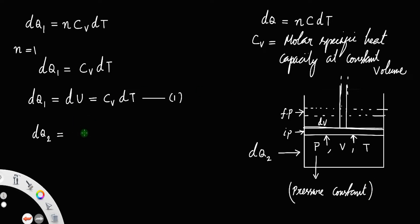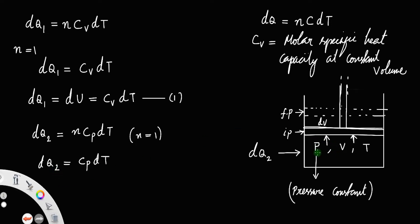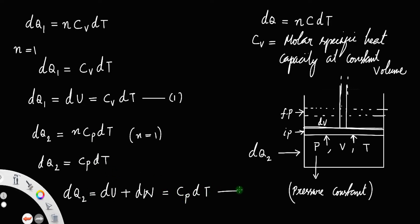Since pressure is constant, the heat supplied is dq2 = n·Cp·dT, and for one mole (n = 1), dq2 = Cp·dT. Let us call that Equation 2. The heat dq2 is used for an increase in internal energy plus the work done to move the piston, so dq2 = dU + dW.